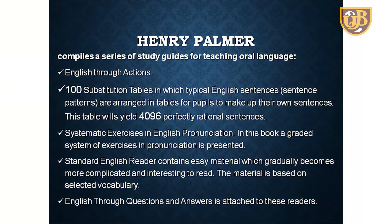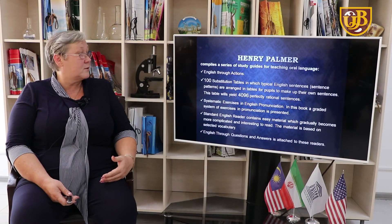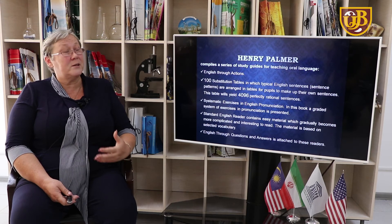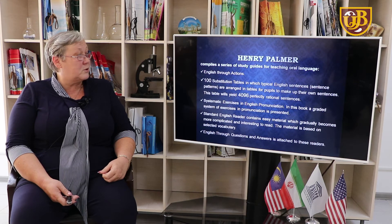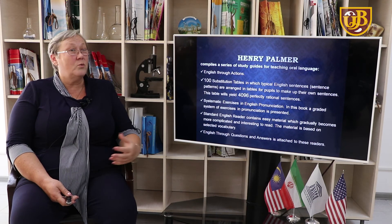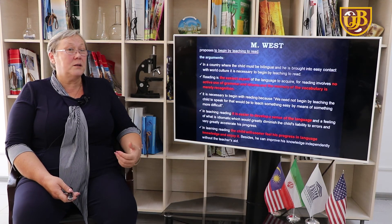Henry Palmer's method comprises a series of study guides for teaching oral language. These include: 'English Through Actions' — 100 substitution tables where typical English sentences are arranged in tables for pupils to form their own sentences; systematic exercises in English pronunciation with a graded system of exercises; a standard English reader with easy material that gradually becomes more complicated; and 'English Through Questions and Answers' attached to these readers. This approach was more sufficient but still had some drawbacks.